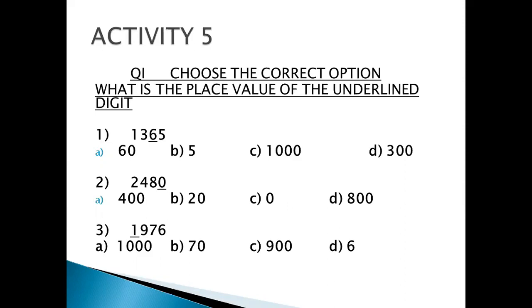So the first one is 1365 and the digit 6 is underlined. So you have to write whether it is 60 or 5 or 1000 or 300. Any of these four options. The second one is 2480. Now here 0 is underlined. So your four options are option A 400, option B 20, option C 0 and option D 800.